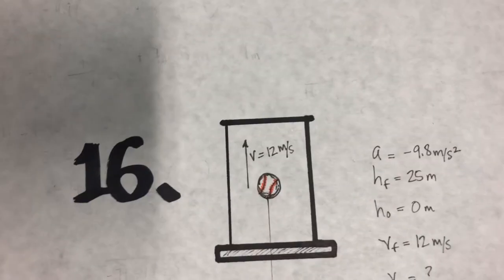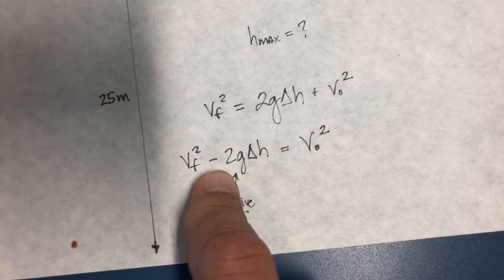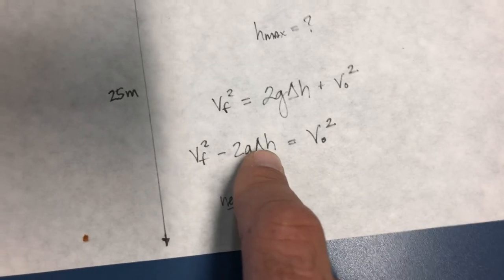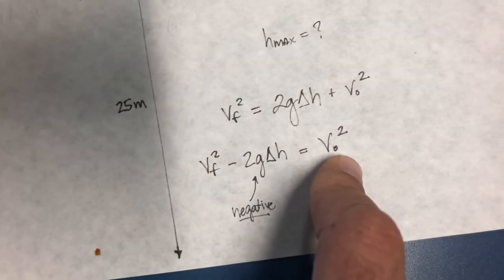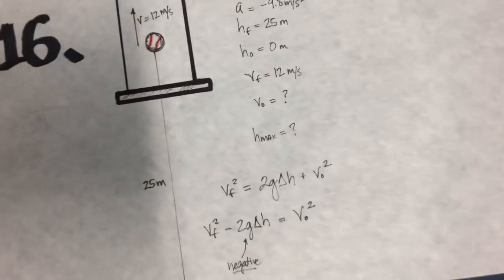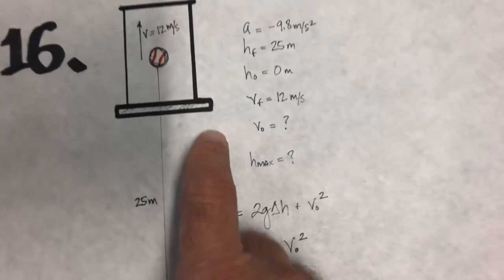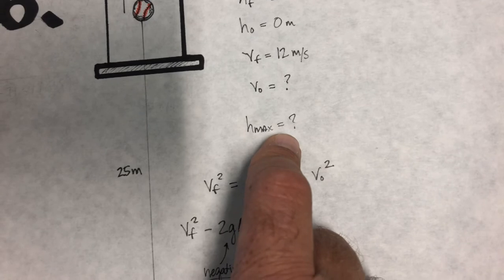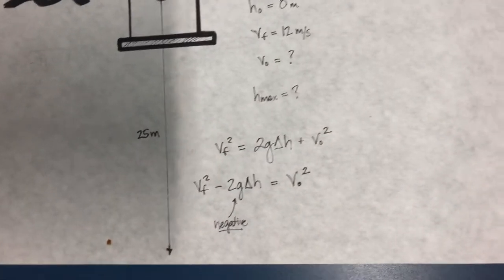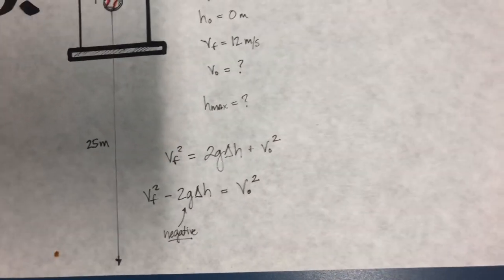That's equal to v initial squared. Once you get that, then you just set this equation equal so that we're doing height max. We take v squared over 2g. We could write that in conservation of energy.